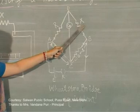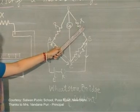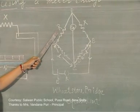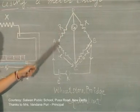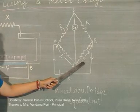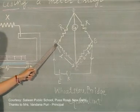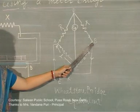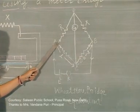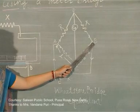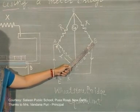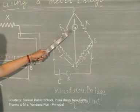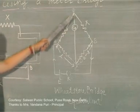Resistance X is the one which we want to determine. Resistance R is a known resistance taken from the resistance box. The lower two resistances are actually part of the wire AB on the meter bridge. In other words, ACB forms the full 1-meter length of the meter bridge wire, and in the middle we connect a galvanometer between points D and C.